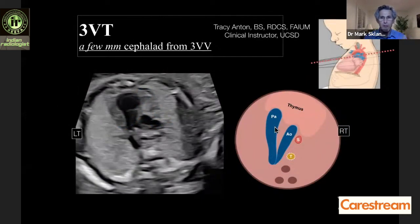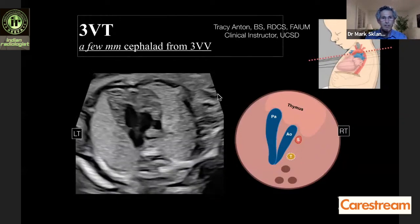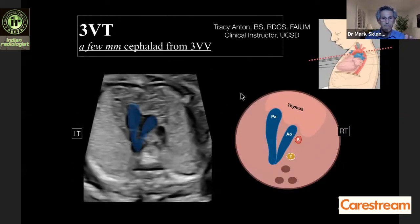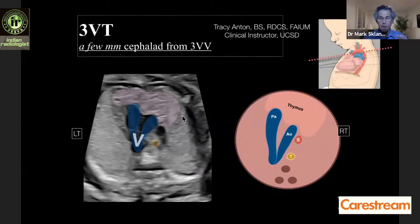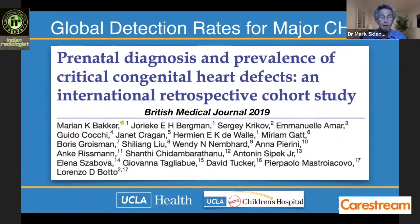The three vessel tracheal view shows the V sign, confirming a left aortic arch and providing much more information. Moving the image you can see the V formed, the trachea, and the thymus anteriorly. There is also a nice tutorial paper on the three vessel view published by AIUM in the Journal of Ultrasound in Medicine that is worth reviewing.